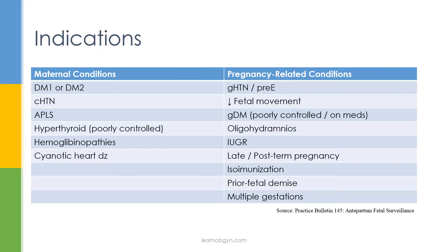Indications for antenatal monitoring include conditions that increase risk of intrauterine fetal demise (IUFD): diabetes (pre-existing or gestational), hypertension (chronic, gestational, or preeclampsia), antiphospholipid syndrome, decreased fetal movement, poorly controlled hyperthyroidism, hemoglobinopathies, maternal heart disease, oligohydramnios, intrauterine growth restriction, late or post-term pregnancy, isoimmunization, history of prior fetal demise, and multiple gestations (twins, triplets, or higher order).